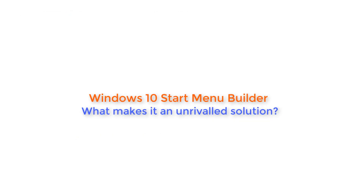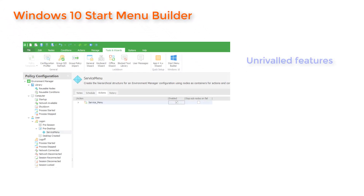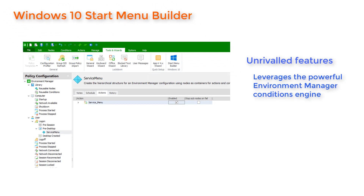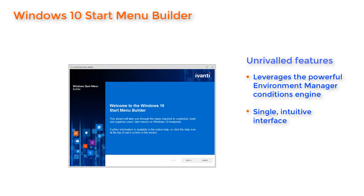What makes the Environment Manager solution unrivaled is the way the customized menu is created, updated, and deployed. The menu is saved as a logon action and can leverage the powerful Environment Manager conditions engine to deploy different customized menus to as many different target groups as you want. Each menu is very simply and quickly configured from one intuitive interface.